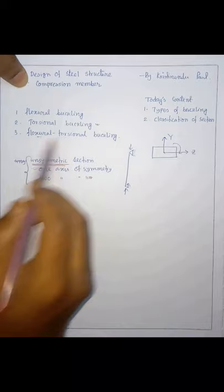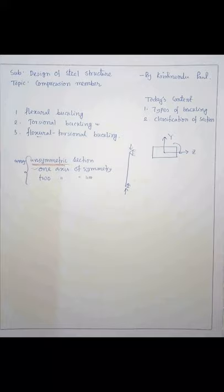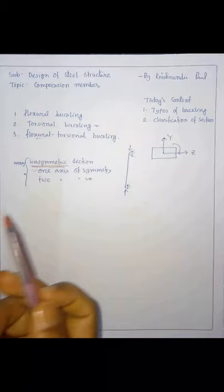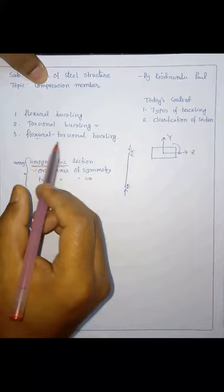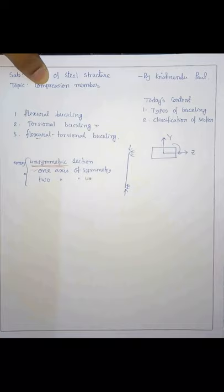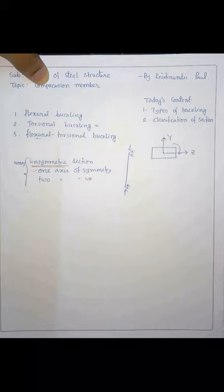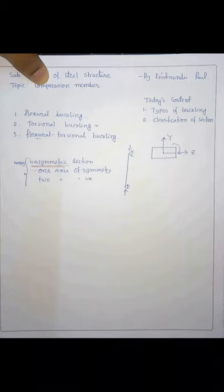A member symmetric about both axes may still show some torsional buckling. Every section has resistivity — flexural resistivity and torsional resistivity, or both. If a section has less flexural resistivity compared to torsional resistivity, it will show flexural buckling under compression. If a member has less torsional resistivity compared to flexural resistivity, it will show torsional buckling.